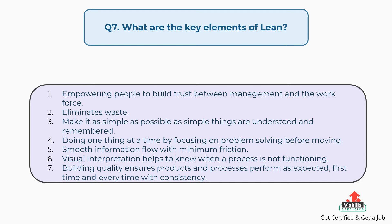5, smooth information flow with minimum friction. 6, visual interpretation helps to know when a process is not functioning. 7, building quality ensures products and processes perform as expected, first time and every time with consistency.